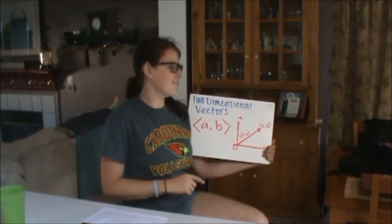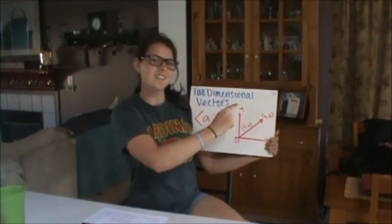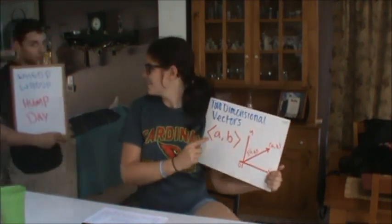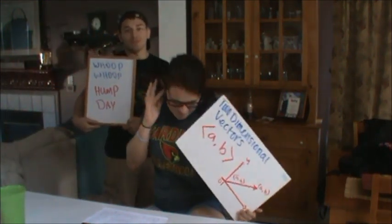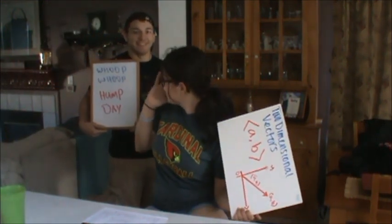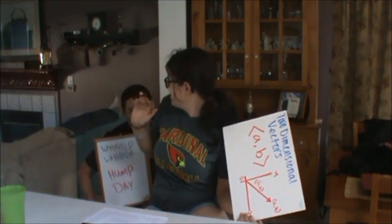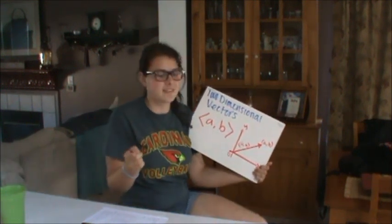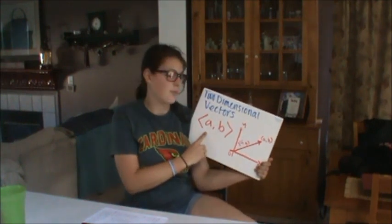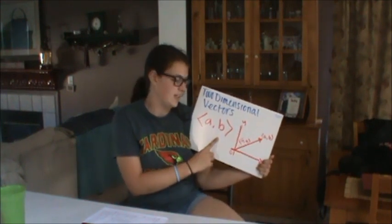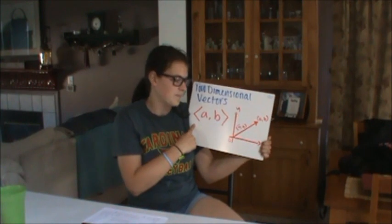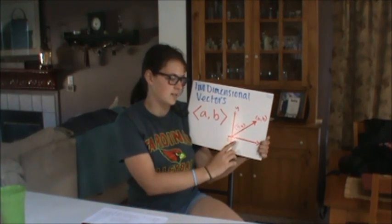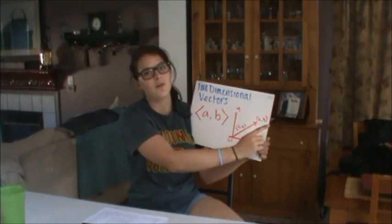I'm Melissa and I'm here to talk to you about two-dimensional vectors. The standard representation is two points, A and B, and they have special brackets, so make sure you always put those in when you're talking about vectors. A vector is basically an arrow from the origin to the point.